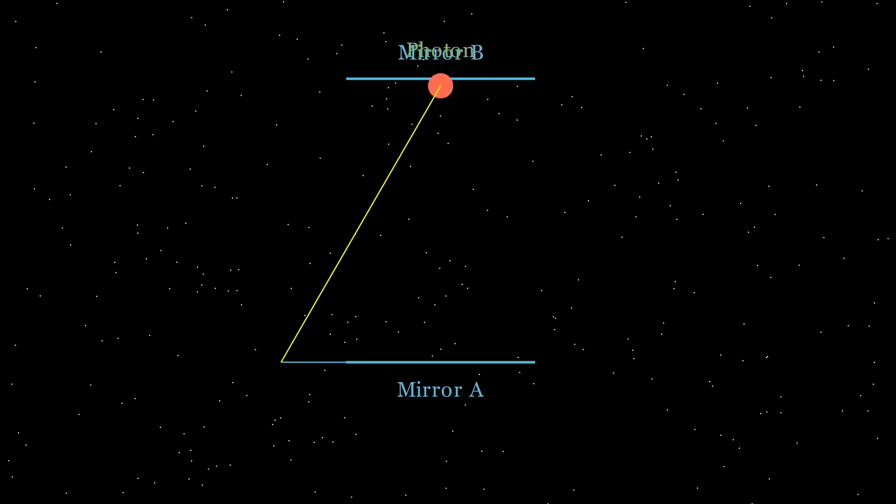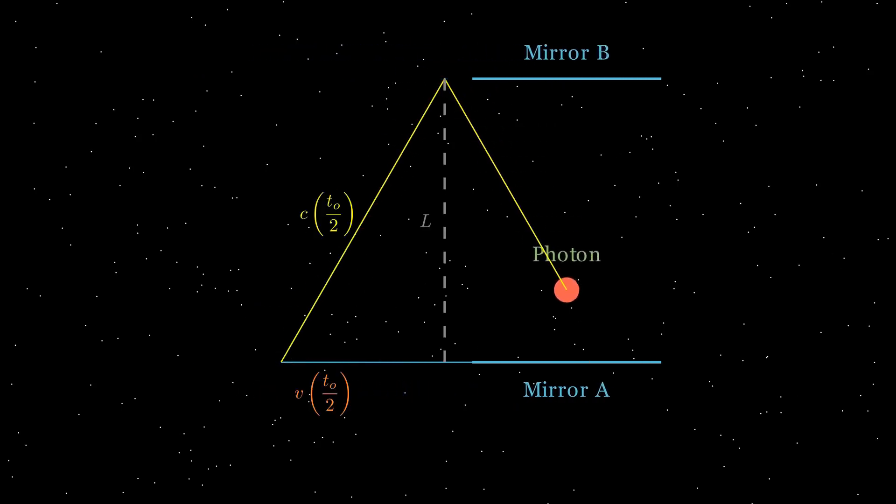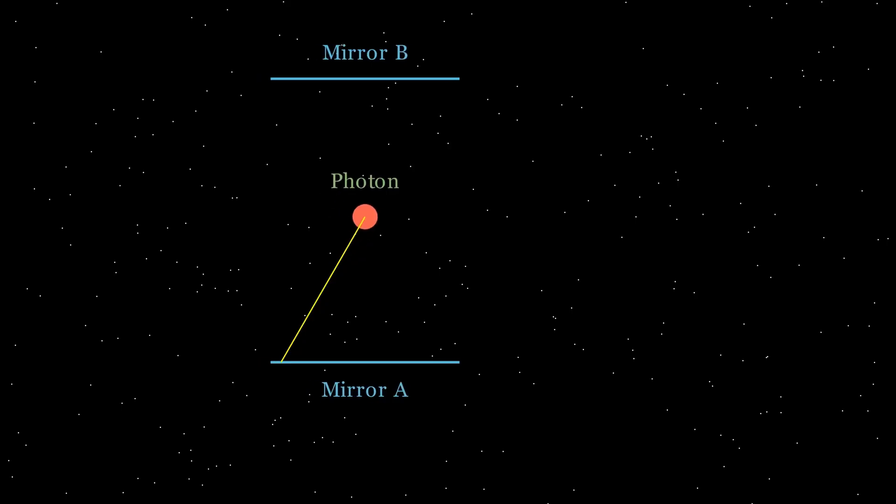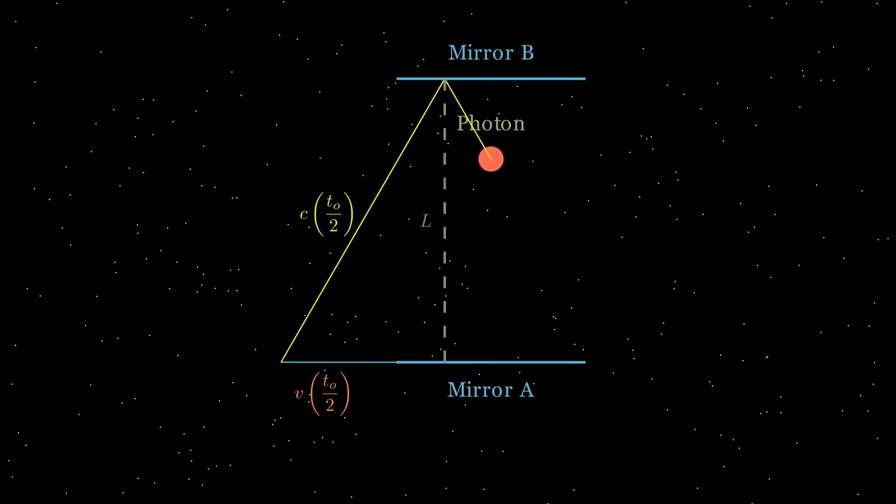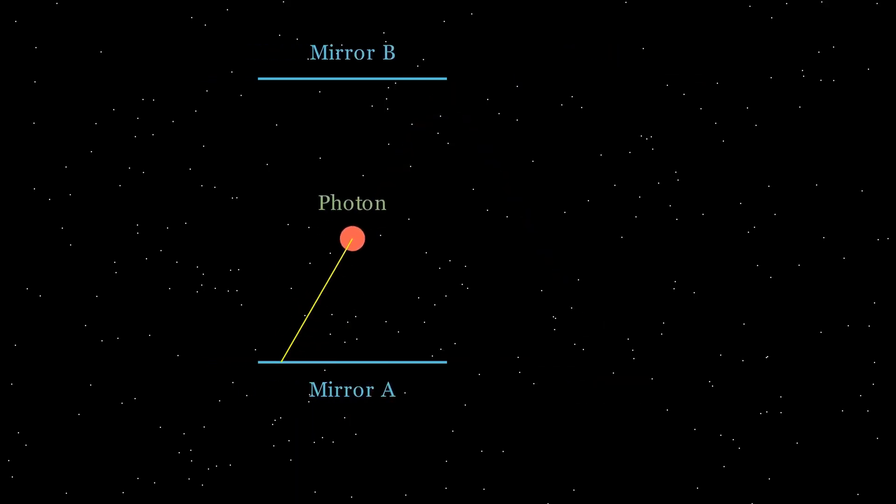When the photon leaves the lower mirror it begins to rise. As the upper mirror is also moving sideways along with the ship, by the time the photon reaches the top, the mirror has shifted forward. The photon must therefore travel diagonally.